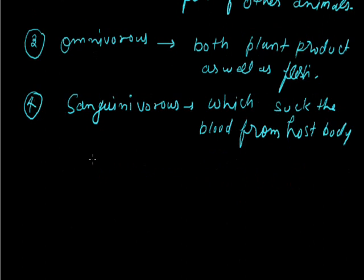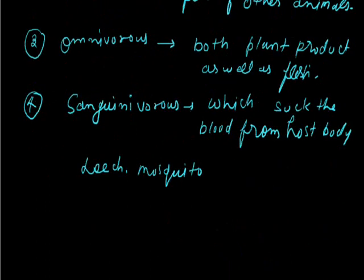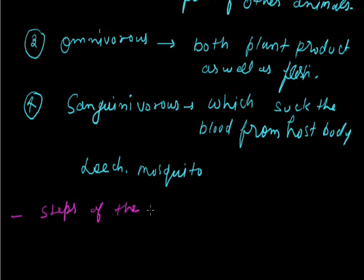When we go to the bank of a river, a leech may attach to our body and suck blood. In our homes, mosquitoes also suck blood from our body. These are examples of sanguinivorous organisms. Some animals also feed as parasites on the body of a host. Now let's move to the steps of nutrition — what happens to food when it comes inside the body.